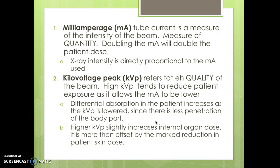When we talk about milliamperage (mA), that's the tube current, measured as the intensity of the beam. It's measured as quantity — doubling the mA doubles the patient exposure or dose. So the x-ray intensity is directly proportional to the mA used.